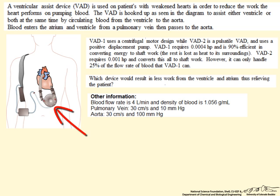The VAD is hooked up as seen in the diagram to assist either ventricle or both at the same time by circulating blood from the ventricle to the aorta. This reduces the amount of work that the ventricle and atrium has to do and this allows a heart that is in a weakened condition to heal.